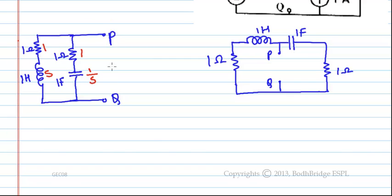The equivalent impedance between the points P and Q can be written as Z_th equals 1 plus 1 by s. This represents the series combination of resistance and capacitance parallel with 1 plus s which represents the resistor and inductor.